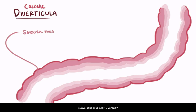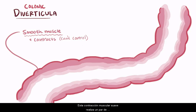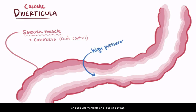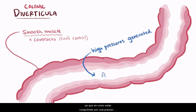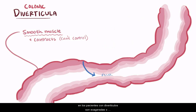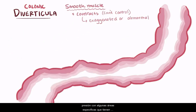The large intestine has a smooth muscle layer, and it's able to contract using that muscle layer, except that we can't consciously control these because it's smooth muscle rather than skeletal muscle. This smooth muscle contraction accomplishes a couple things, like mixing ingested food and moving digested food toward the end of the line. Whenever it contracts, higher pressures are generated inside the lumen. It's thought that contractions in patients with diverticula are exaggerated or abnormal in some way, which causes an unequal distribution of pressure with some specific areas having really high pressures during these contractions.